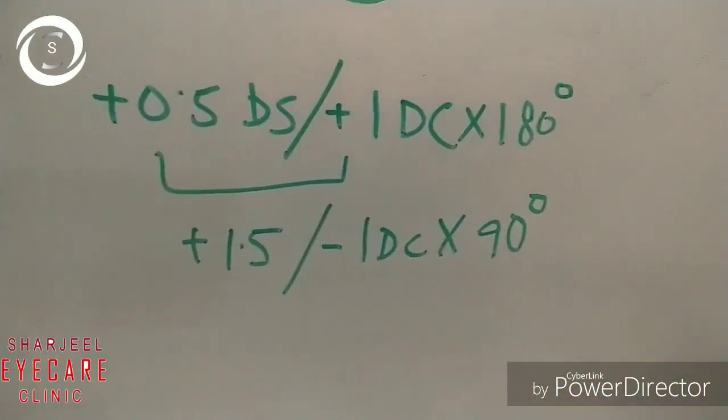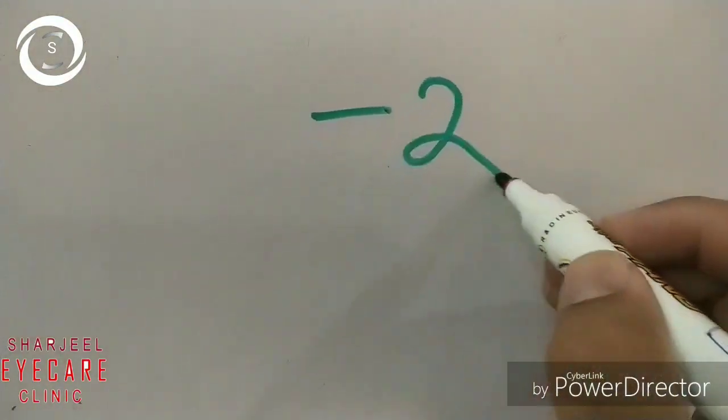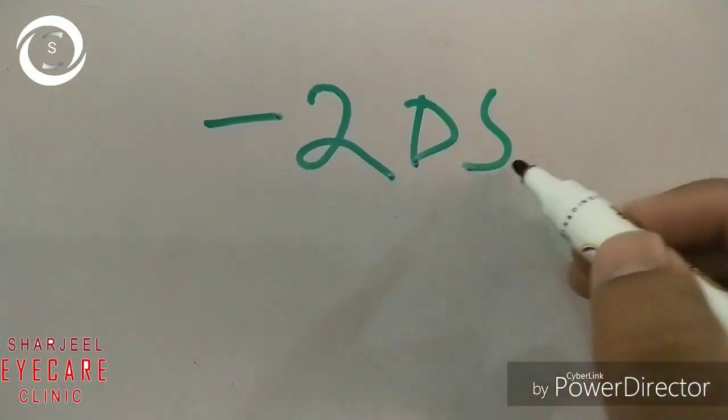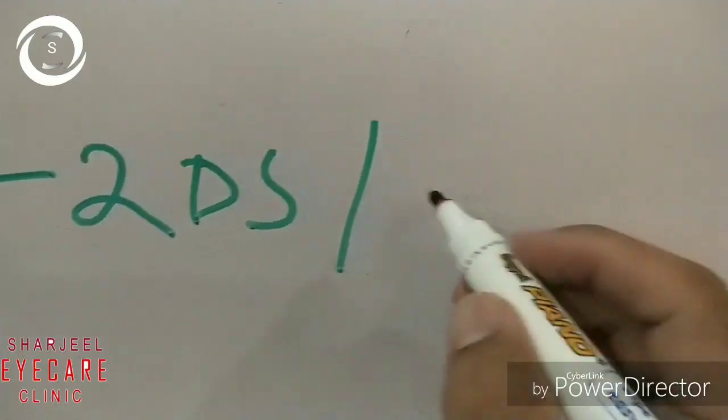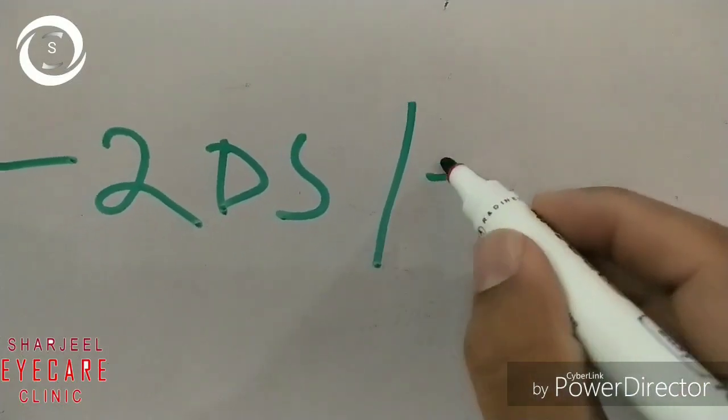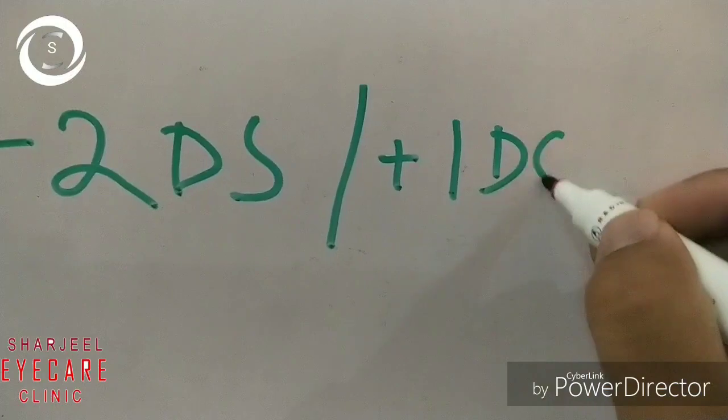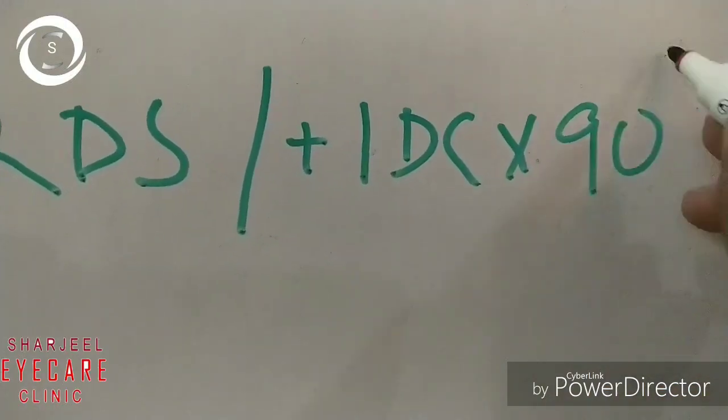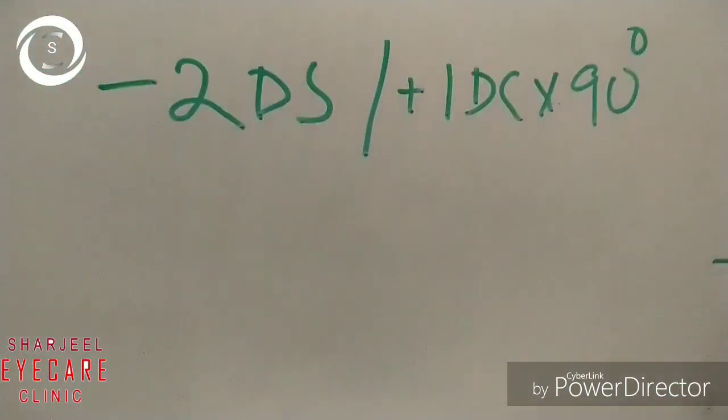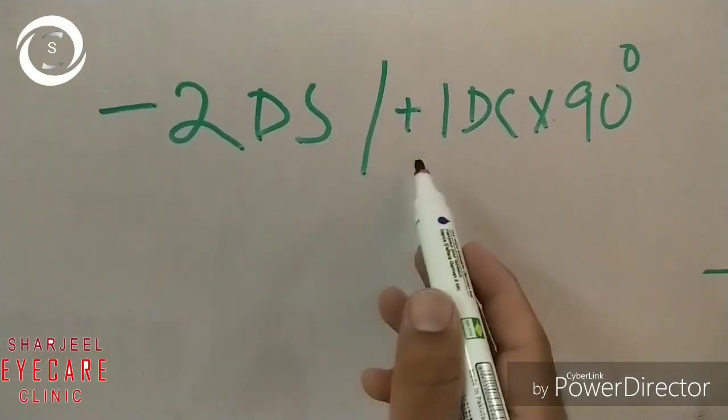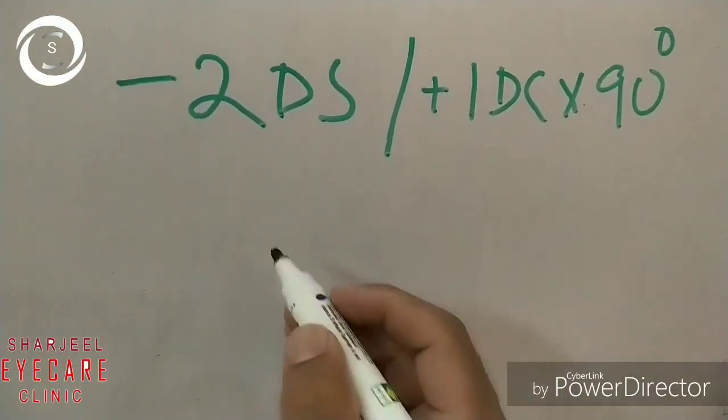So that's how you transpose. Now take another example: minus 2 sphere plus 1 cylinder at 90 degrees. Now minus 2 and plus 1, if you add them, you get minus 1 as a sphere.